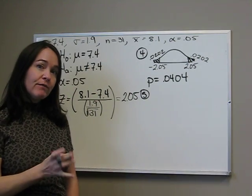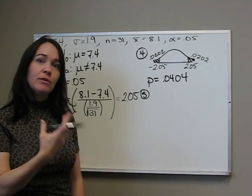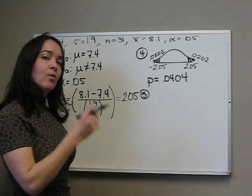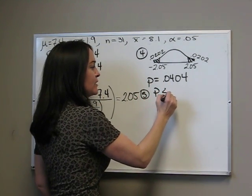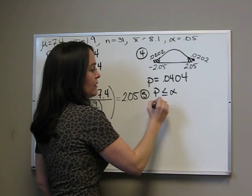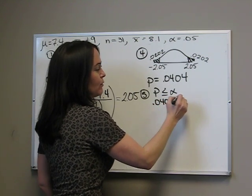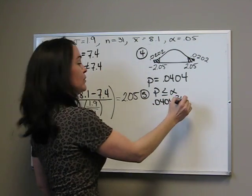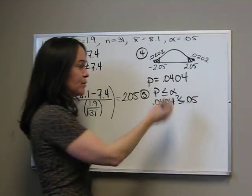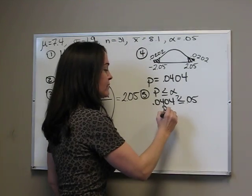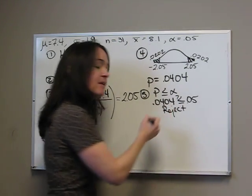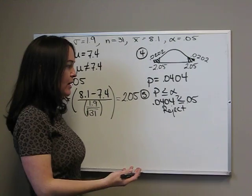Now we're ready for our decision, reject or fail to reject. With the p-value approach, we always see if p is less than or equal to alpha. So, is 0.0404 less than or equal to alpha, which is 0.05? And it is, so we reject. If our p-value had been greater than, we would have failed to reject.